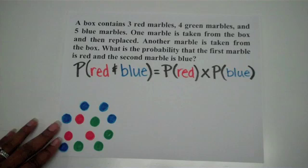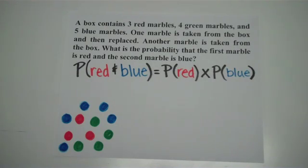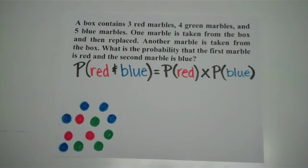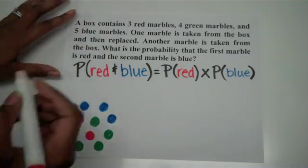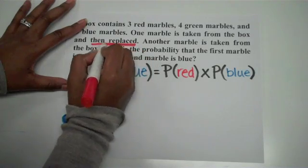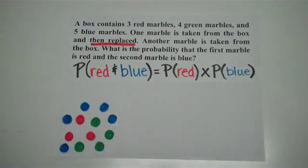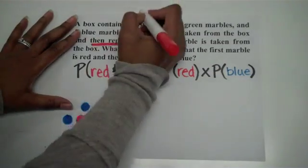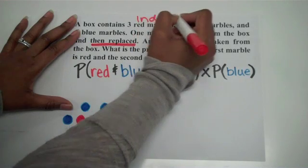Alright, so let's look at some examples. Our first example says that a box contains three red marbles, four green marbles, and five blue marbles. One marble is taken from the box and then replaced, and another marble is taken from the box. What is the probability that the first marble is red and the second marble is blue? One of the key things to look at here: it says the marble is replaced. So if I take a marble and put it back in, it does not affect what happens when I take my second marble out. So these are two independent events.